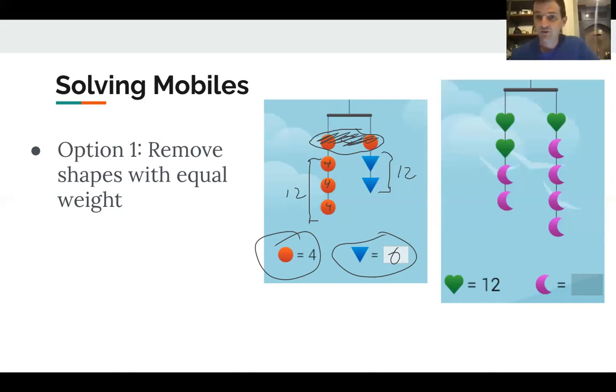And of course, we can look at a similar problem over here with the hearts and crescent moons. Something's very interesting here. We know that the weight of the hearts are 12, but we don't know the weight of the crescent moons. And yet we should be able to figure out how to make this balance. So we're going to use the same exact strategy. We're going to remove shapes that have an equal weight. So if I remove this pair of hearts, I've removed 12 pounds from one side and 12 pounds from the other.